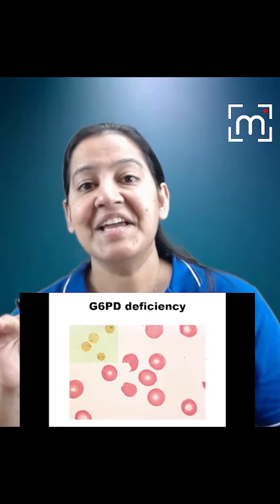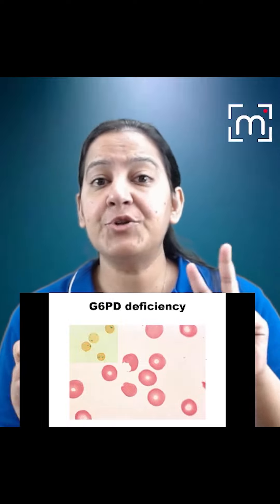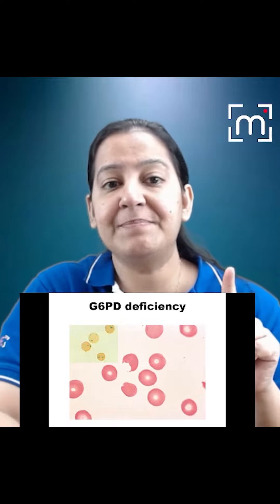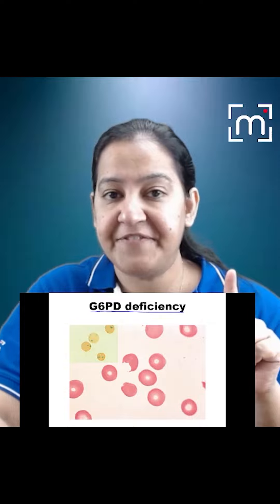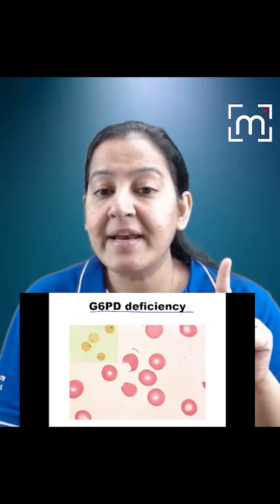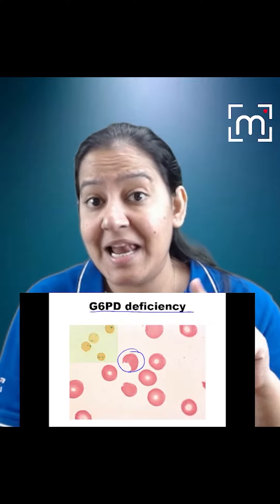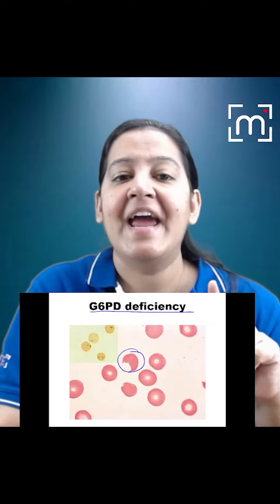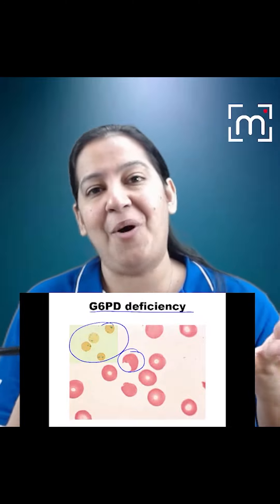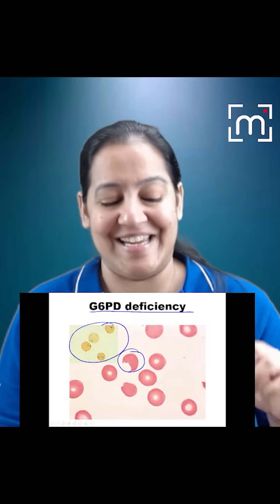Can you identify the two abnormalities shown in this peripheral smear of G6PD deficiency? Number 1 is the bite cell, and number 2 is Heinz bodies, which are seen on the supravital stain.